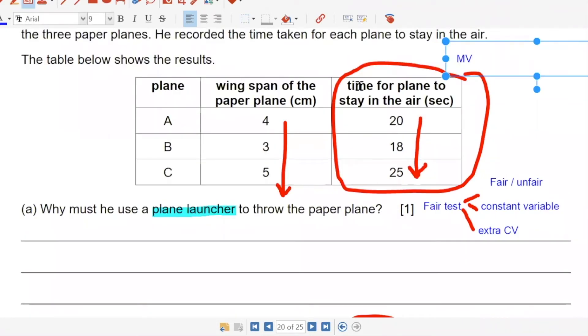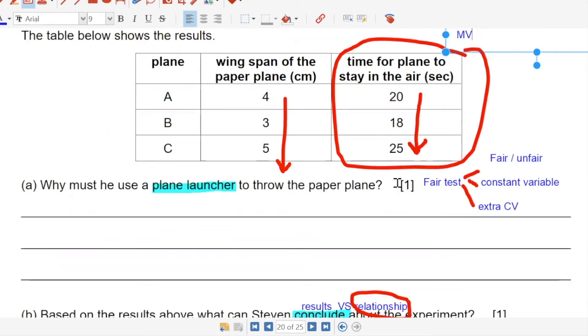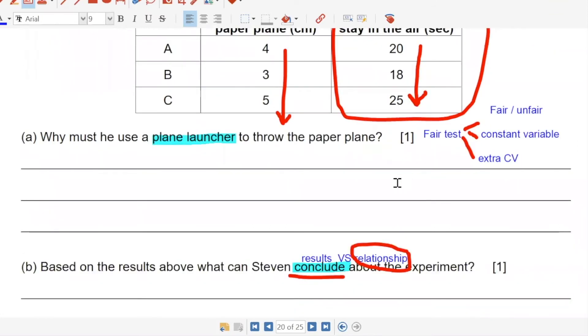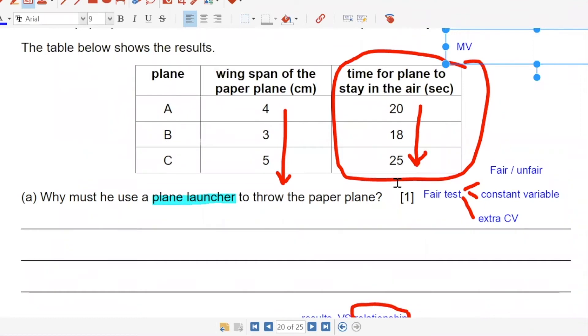What does this show you? The bigger the wingspan of the paper plane is fine. Then you must tell me what happened. How come it stays longer in the air? More air resistance? Yes. Like what Anya says. Air resistance. More air resistance.